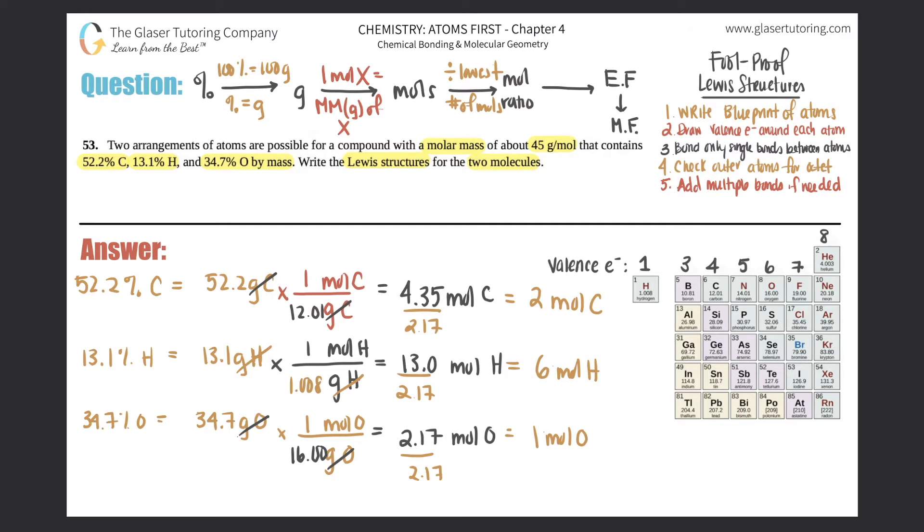So now to go from your mole ratio to empirical formula, all you got to do is just make the compound. So these numbers will turn into the subscripts. So it looks like you have two carbons. So C2H6O. And that would be your empirical formula. Now we just have to find out what the molecular formula is, if it matches the molar mass that they gave us, which was 45. So whenever we do that, we have to take the molar mass that was given and divide it by the empirical mass.